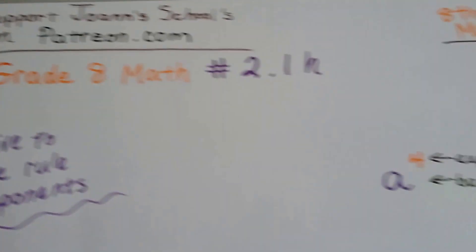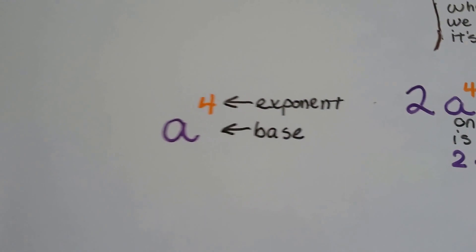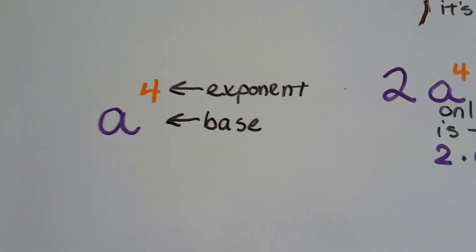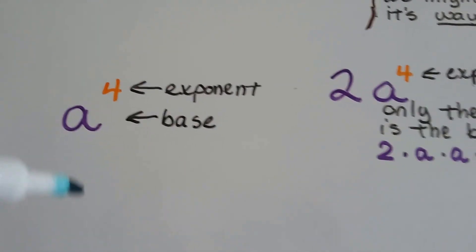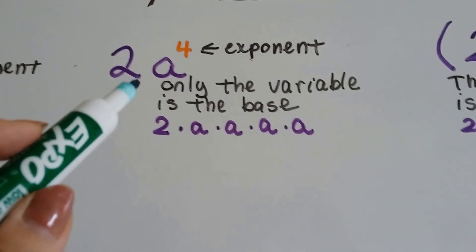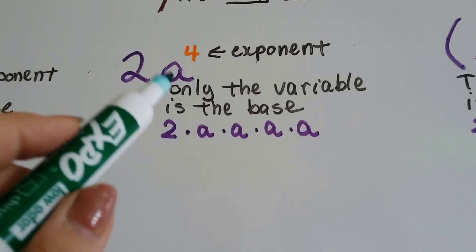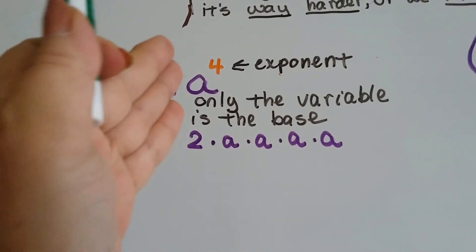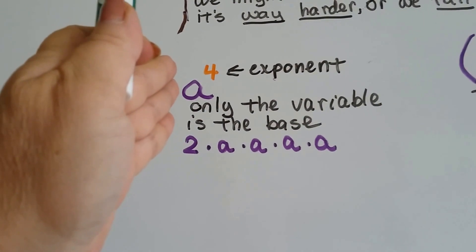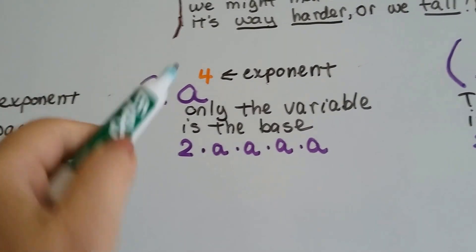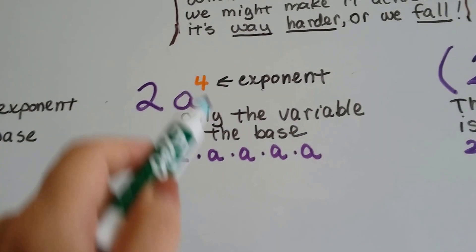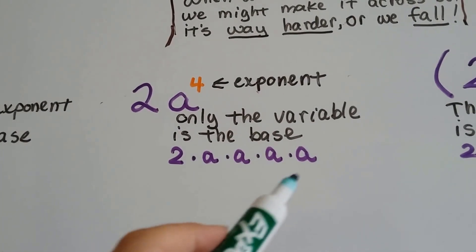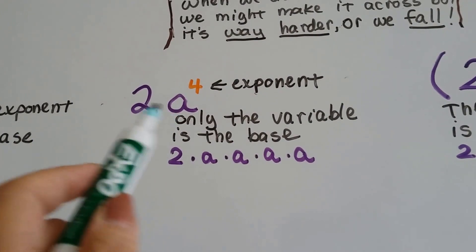We've had a lot of rules. So we know that the little 4 — this little orange 4 — is the exponent, and then the a is the base. When it's got a coefficient in front of it, this is the variable and this is the coefficient. That coefficient is not part of the base; it's just a. The a is the one that's the base with the 4 exponent. And this would be 2 times a times a times a times a, because when they're together it means multiplying.